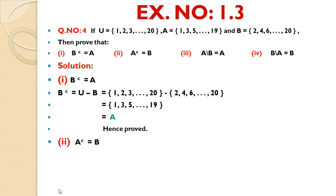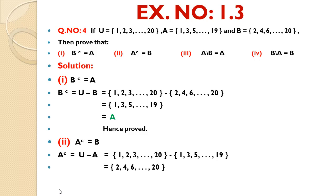Second part — A complement = B: As we know, A complement = U - A. We write U's elements, difference sign, then set A's elements. Universal Set U contains all elements from 1 to 20; set A contains odd numbers 1 to 19. The difference gives even numbers from 2 to 20, that is 2, 4, 6, ..., 20, which equals set B. Hence proved.